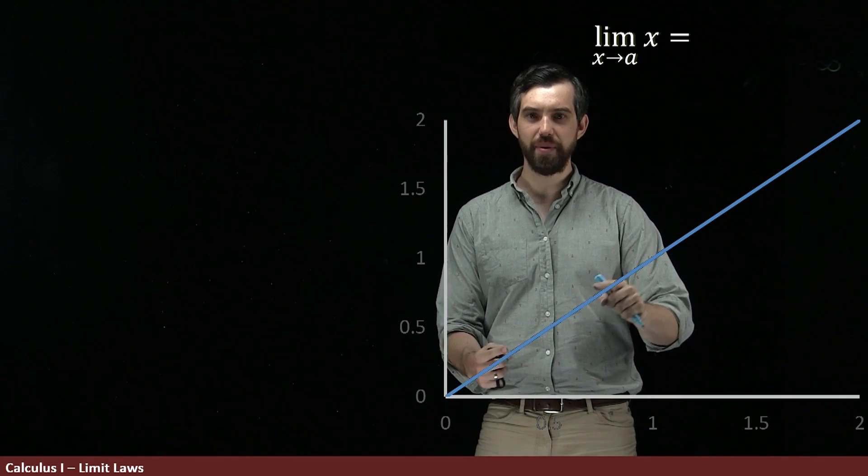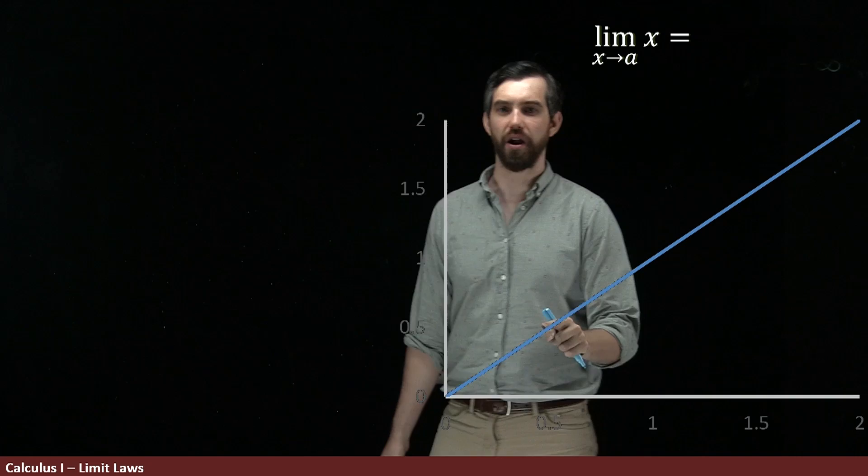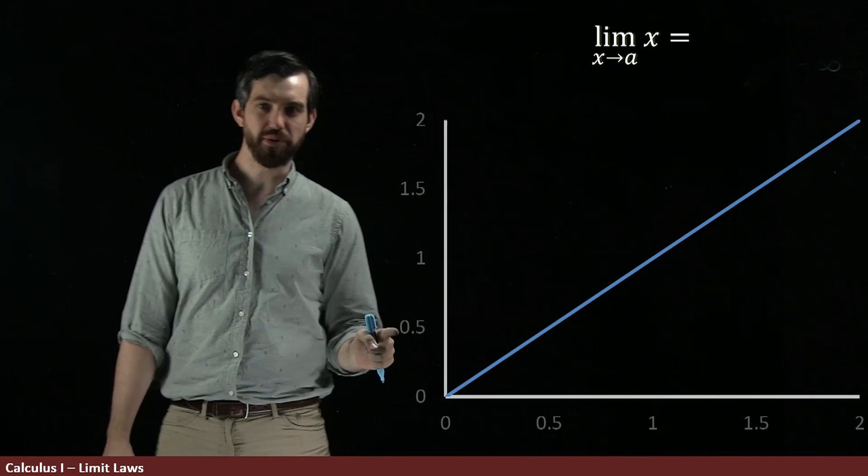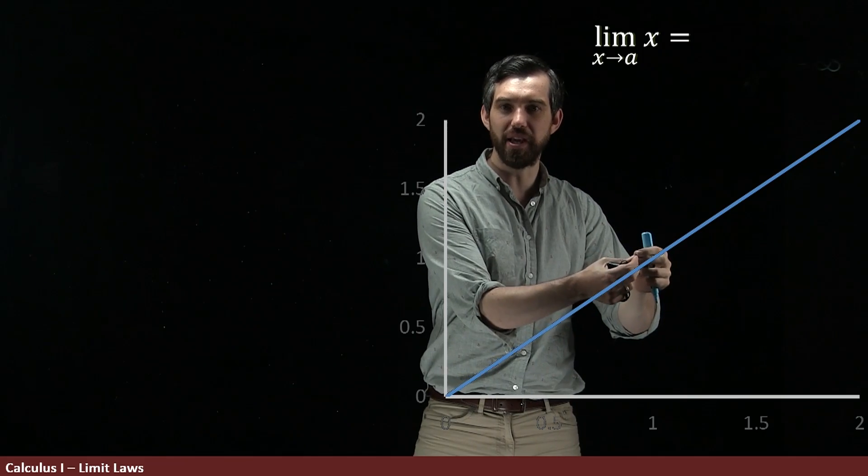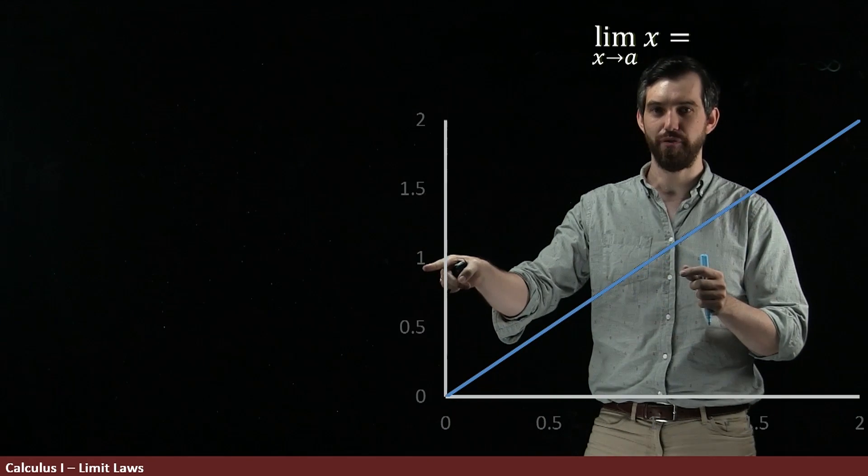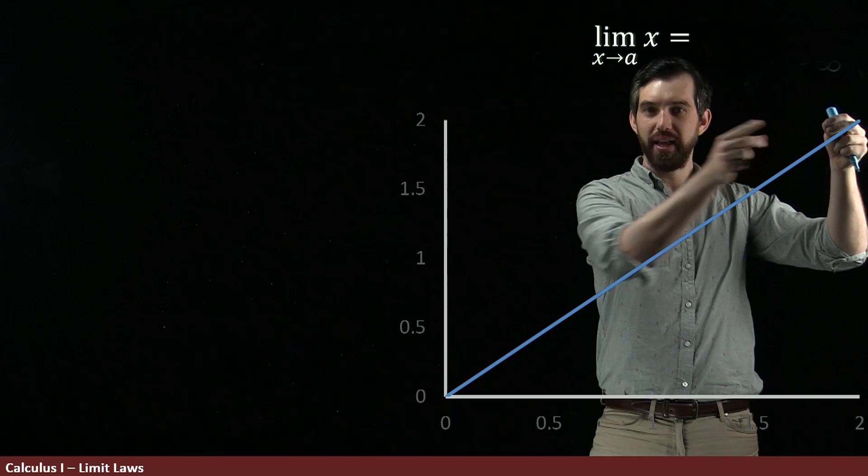And notice if I was to do the limit as we get close to 0.5 here, 0.5 is just equal to, well, 0.5. If I got close to the value of 1 up here, well, that's going to have this height of 1 over here. If I go up to 2, it's going to have this height of 2.